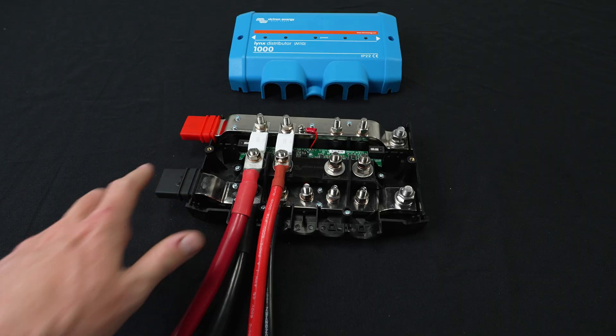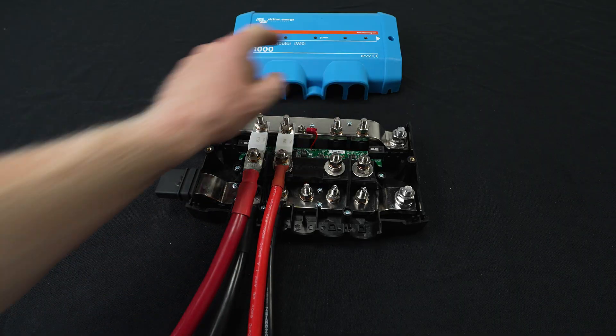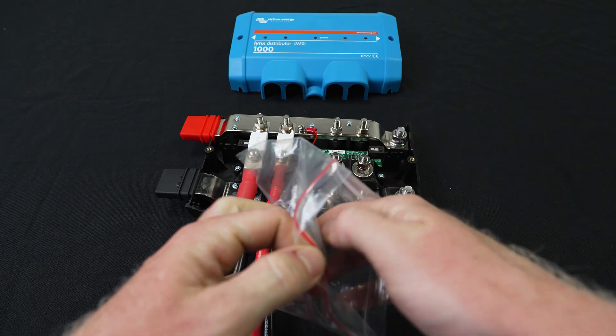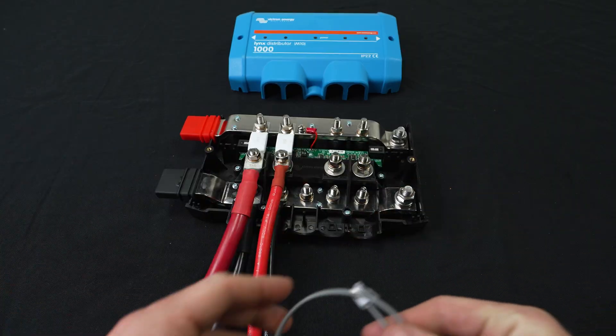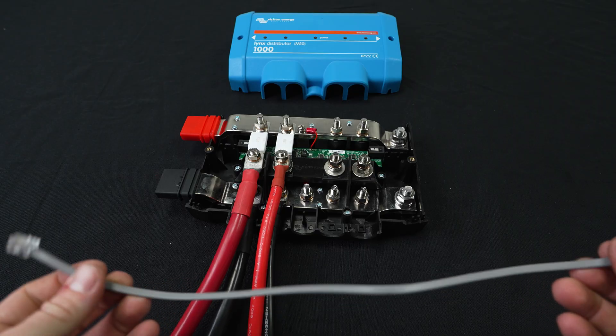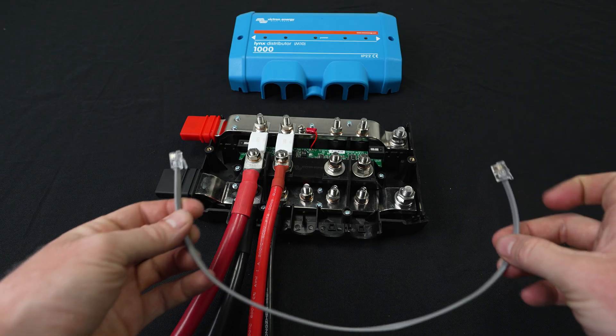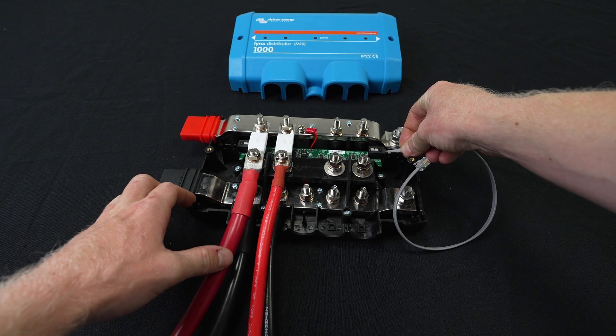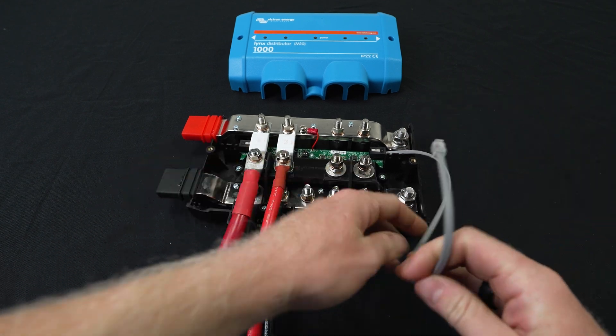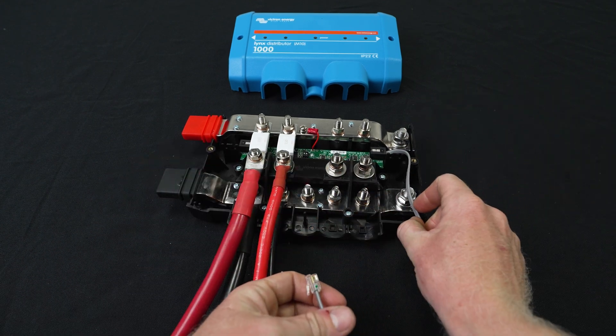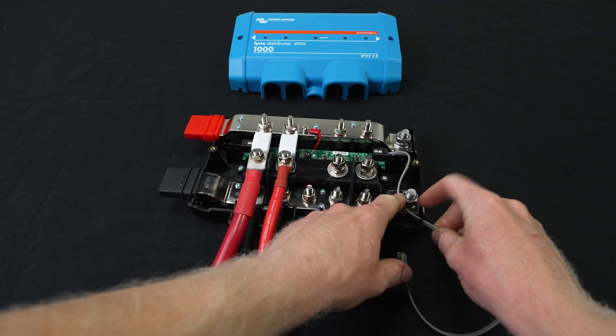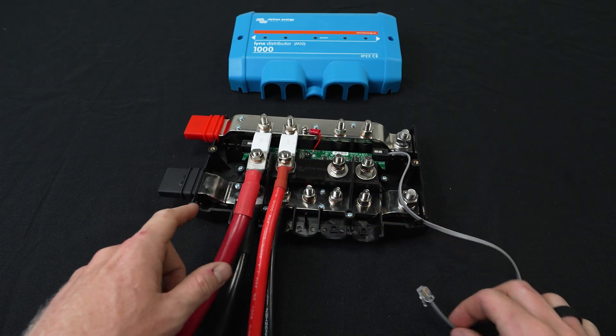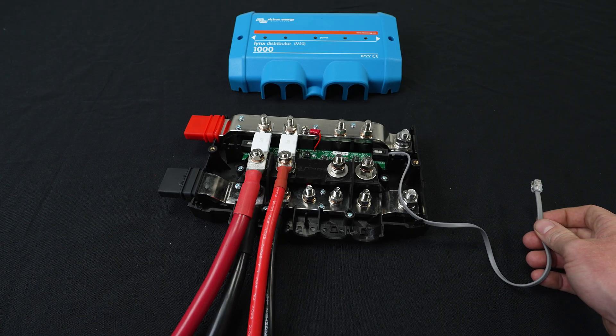So now that we've got our cables landed, we're going to go ahead and make sure we get the LEDs on the distributor powered. So we're going to take our RJ12 cable. And if you have a Lynx shunt or a Lynx BMS, you can plug this RJ12 cable between the Lynx distributor and your Lynx shunt or BMS. And it can exit the distributor through the hole here or the hole there. And then it'll plug into the same hole on your shunt or your BMS.